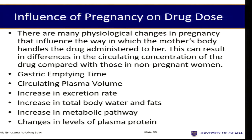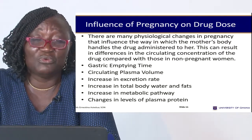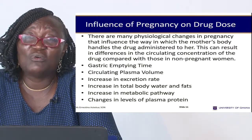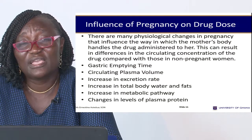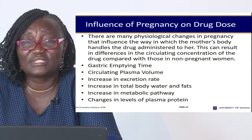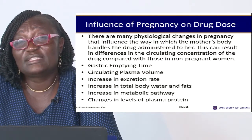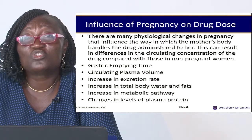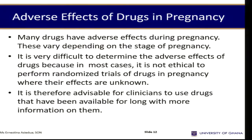Regarding the influence of pregnancy on drug dose: many physiological changes occur during pregnancy. Gastric emptying time may be increased or decreased, affecting drug absorption. The circulating plasma volume goes up during pregnancy, meaning blood reaches tissues very fast. There are also increases in excretion rates, total body weight and fats, metabolic pathway changes, and altered plasma protein levels. All these normal physiological processes affect drug doses, either increasing or decreasing absorption rates.